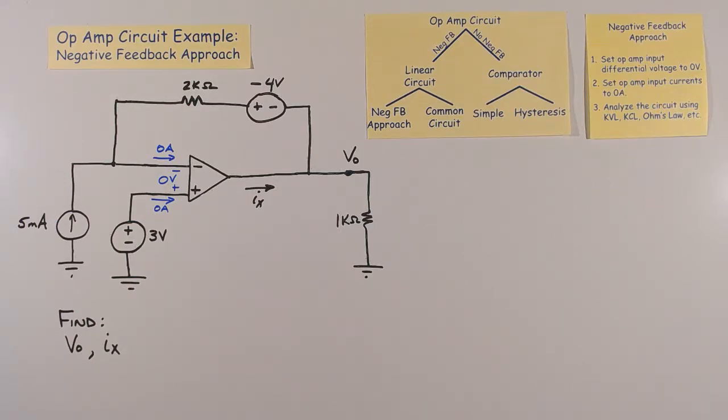Let's start by filling in the currents and voltages that we can easily figure out. Writing these voltages and currents on the circuit can help us figure out ways to find the unknowns that we are trying to find.